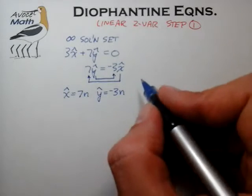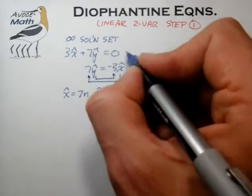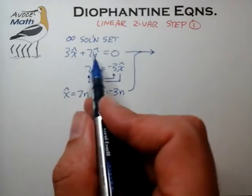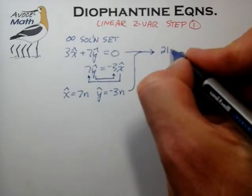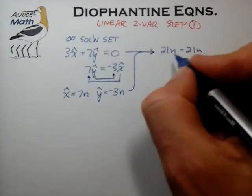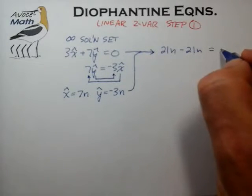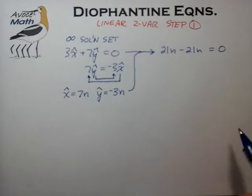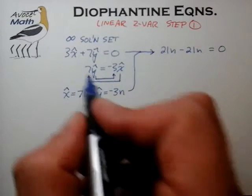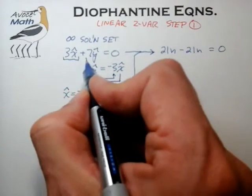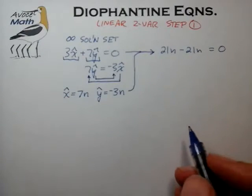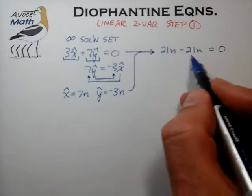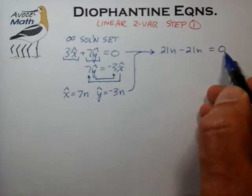With that realization, we can take these two equations, combine them, and substitute into the original equation to discover — which is probably not too big a surprise — that 21n minus 21n does in fact equal zero. Although this is a somewhat trivial equation, it gives us important insights into the behavior of the 3x term and the 7y term in forming this solution set.